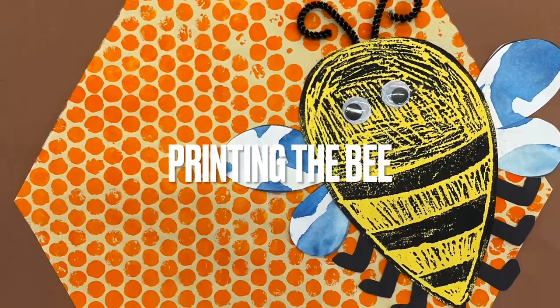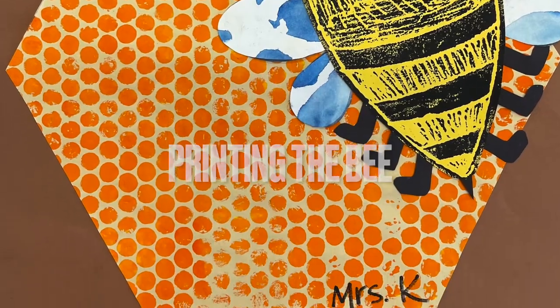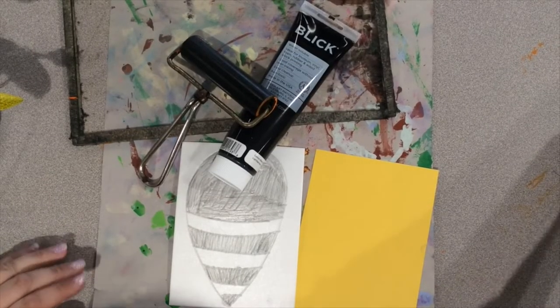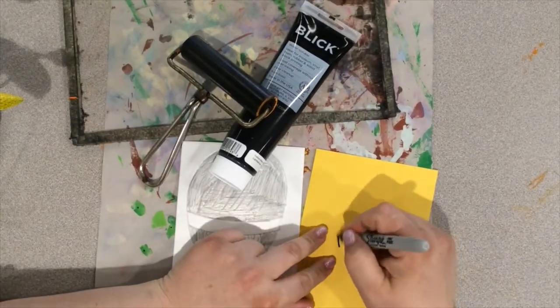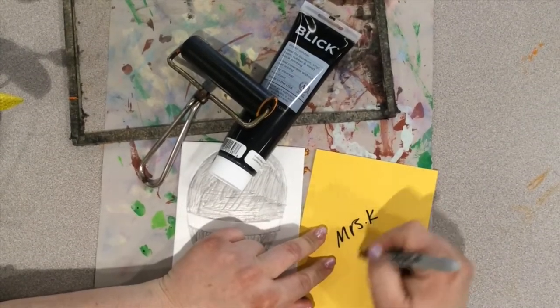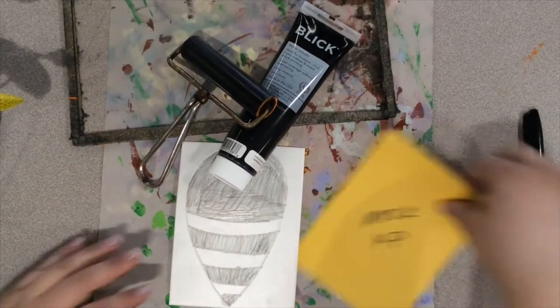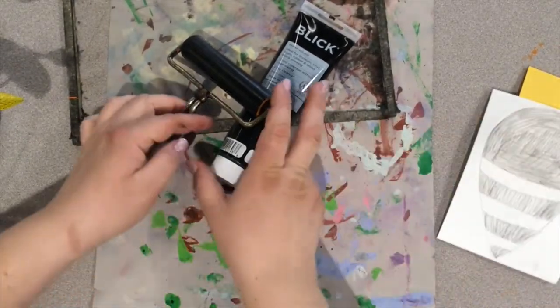Your stamp should look similar to this when you're done. Now that our stamp is complete, it's time to do a print. We're going to start by writing our name and class on the back of our yellow piece of paper. You can set that off to the side while you get your stamp ready.